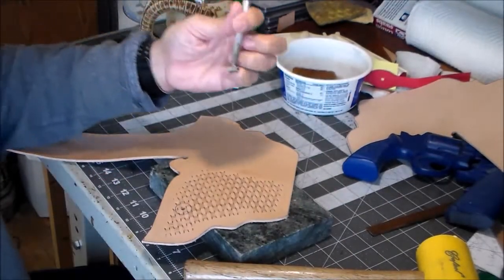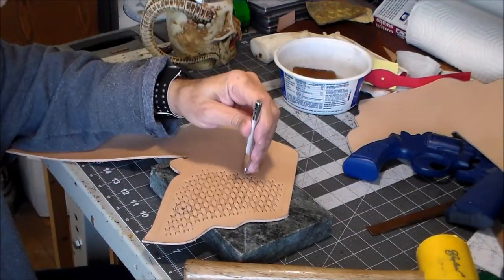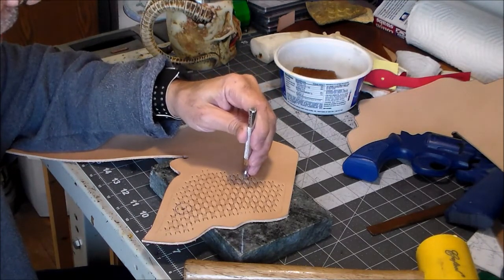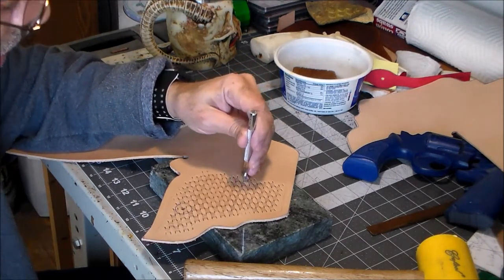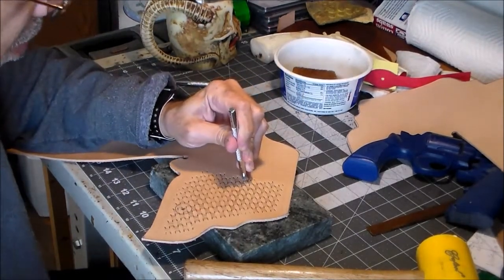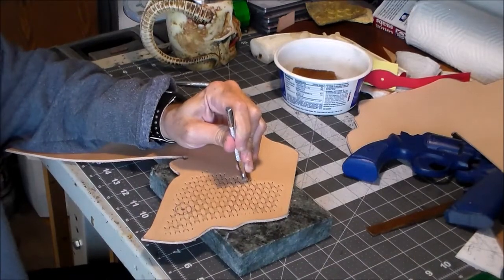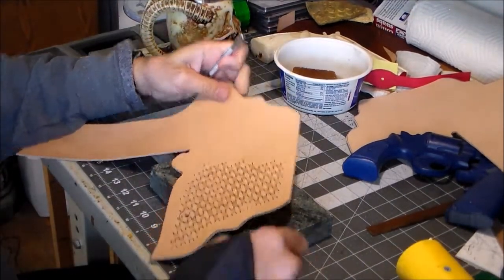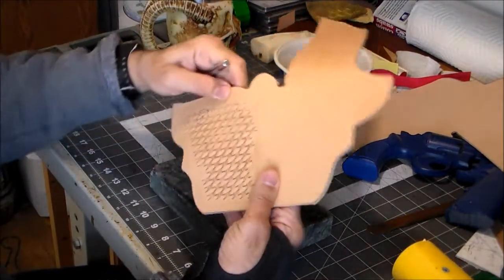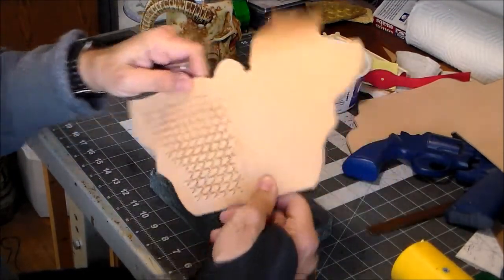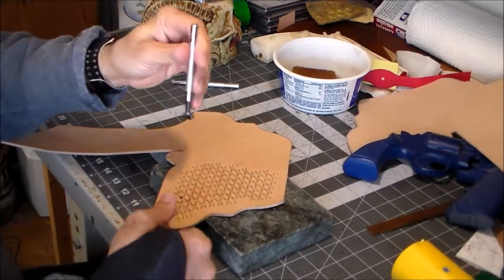Basically, what I do is like right here, I'll take and I'll tilt my tool over so I don't make a full impression, but just a partial impression, and give it a tap. That'll help to fill in a gap. Then once I go through with my border tool, it'll basically tie it all together.